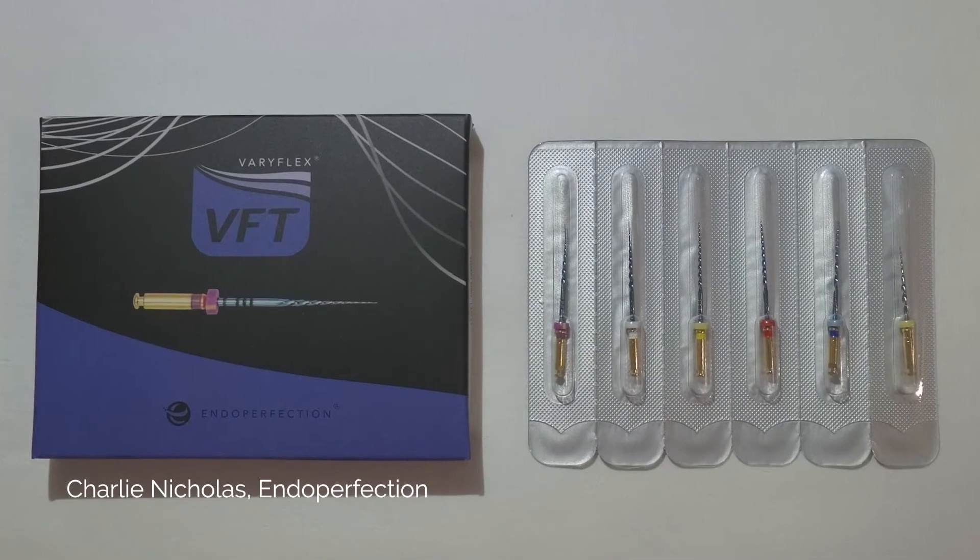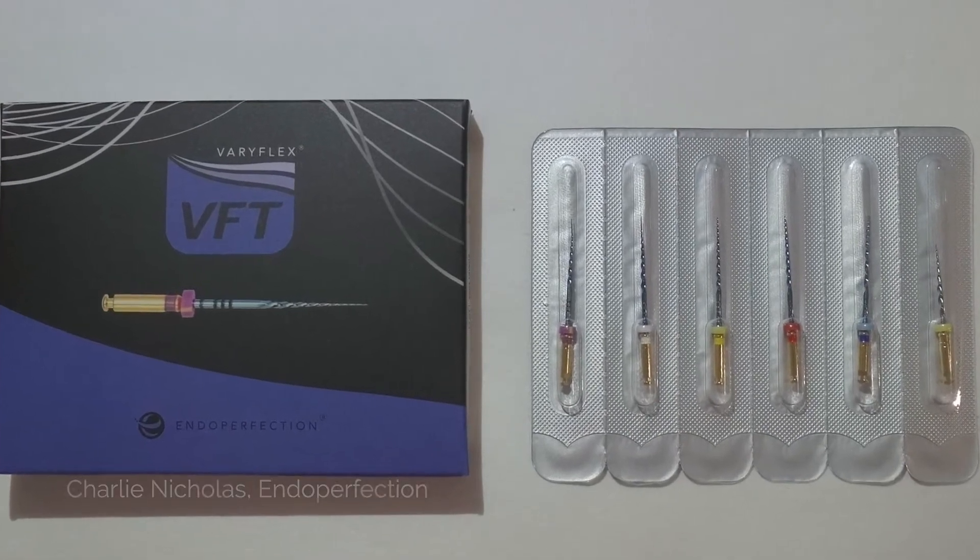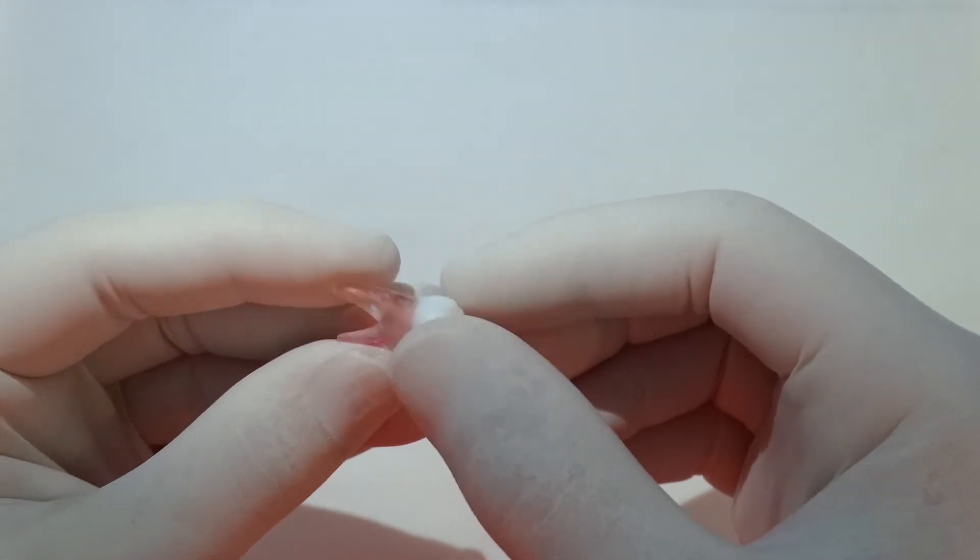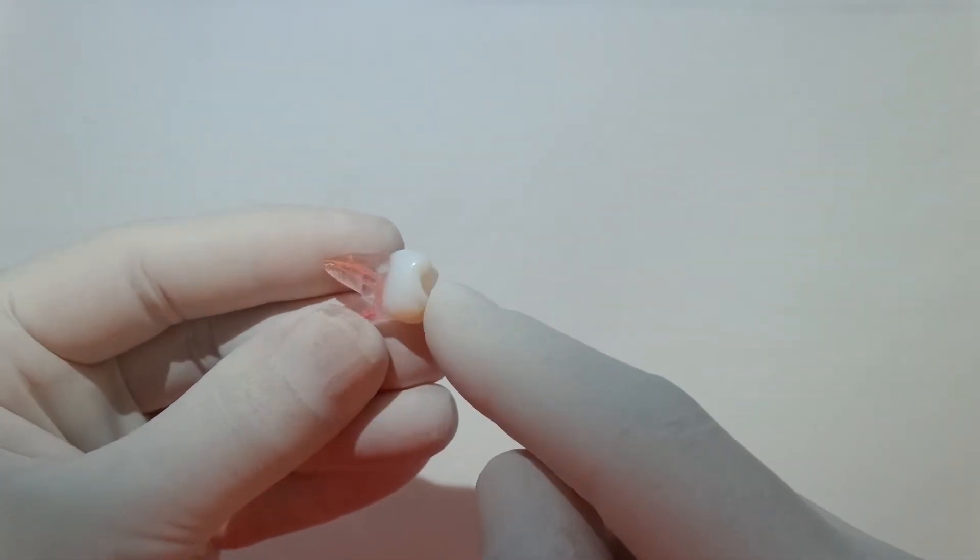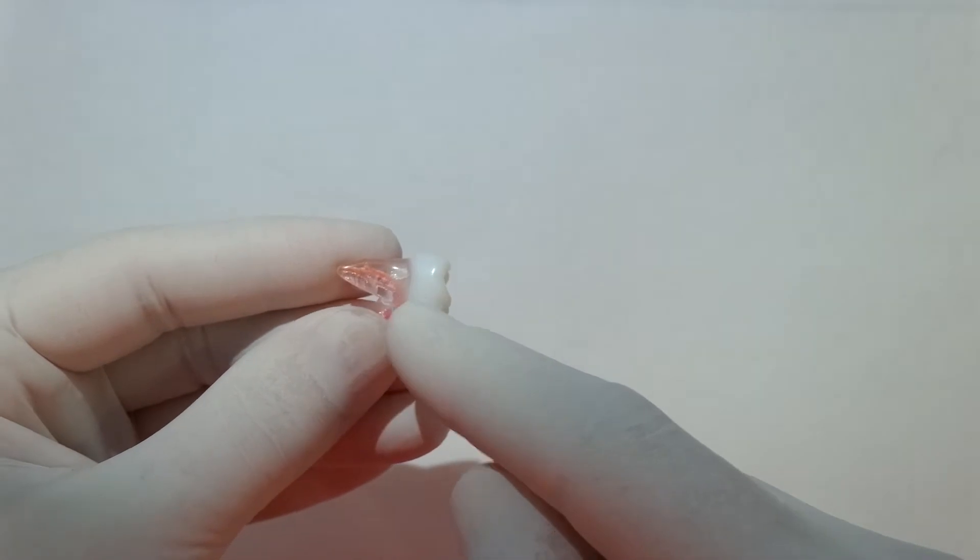Here we're just going to show you how we use our VFT VariFlex taper files. We're going to use these 3D printed teeth, exact replicas of CT scans. This is a really nice upper 6, medium buccal root we're going to look at today.